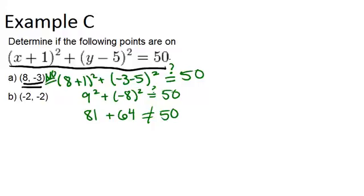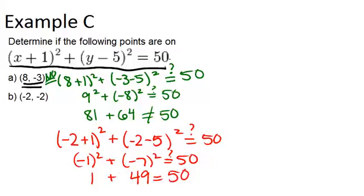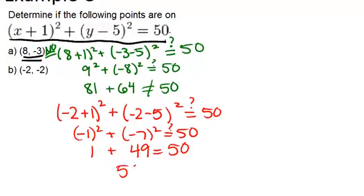Now let's try negative 2, negative 2. So we're going to do the same thing and plug in negative 2 for x, and in this case, also negative 2 for y, because that's what the point is. And we're going to check, does that equal 50? Well, negative 2 plus 1 is negative 1, and negative 2 minus 5 is negative 7. Negative 1 squared is 1, negative 7 squared is 49, so it looks like this point works, because 1 plus 49 is 50. Therefore, this second point is on the circle, because it works in the equation and makes the equation true.